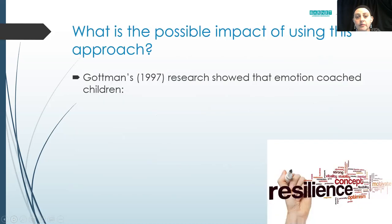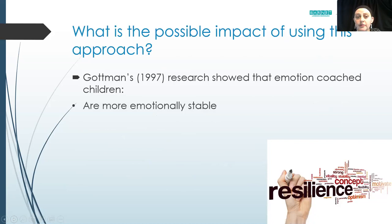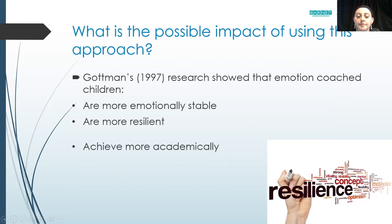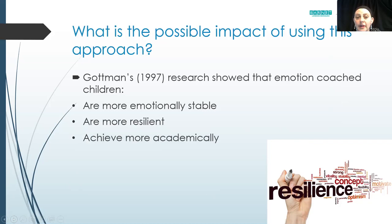Gottman's research showed that emotion-coached children are more emotionally stable, with the ability to regulate their feelings without big highs and lows through the day. Children are more resilient - able to bounce back in the face of adversity. They are also able to achieve more academically, because if we're caught up in our feelings it's very difficult to focus, and if we find it difficult to focus, we'll be listening and learning less.